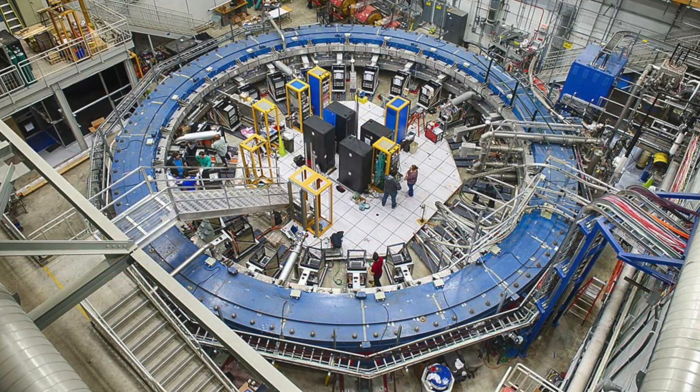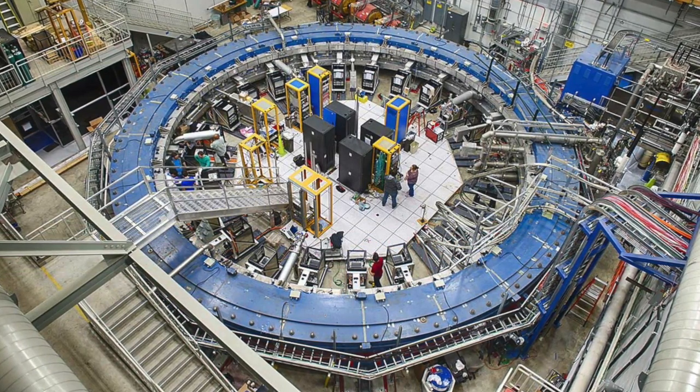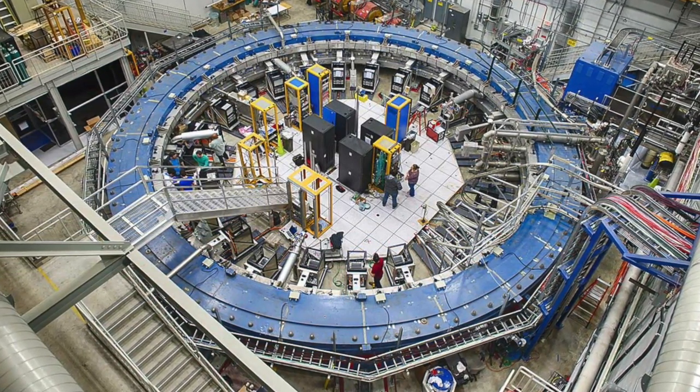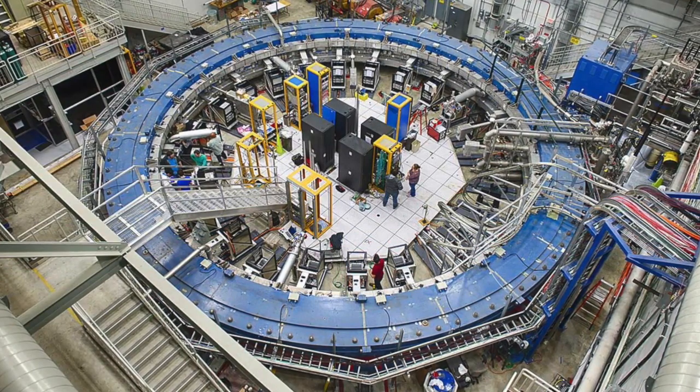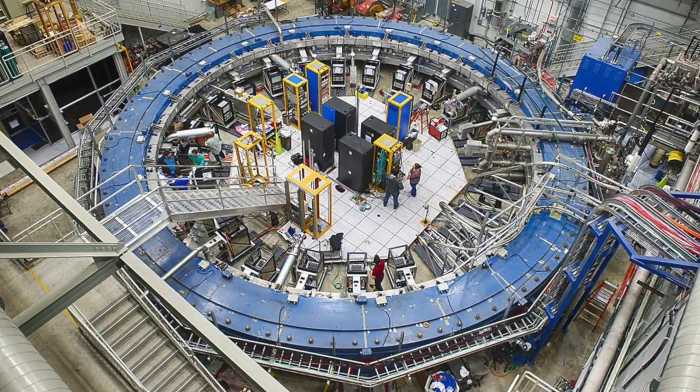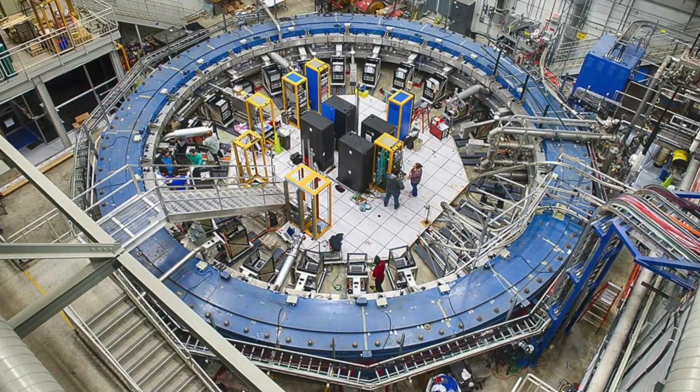The experiment in question is the muon g-2 experiment at Fermilab. It looks at how muons circling around an accelerator interact with a strong magnetic field.